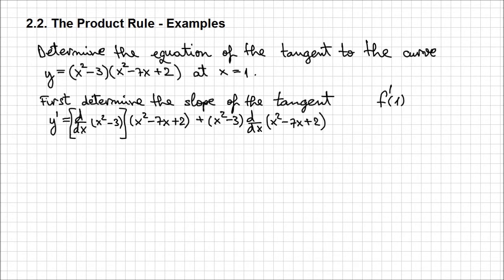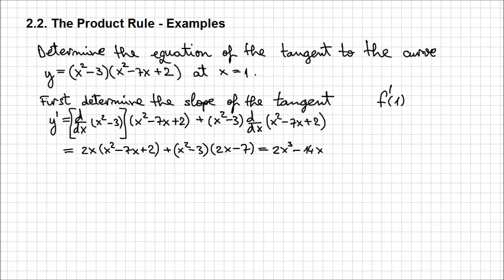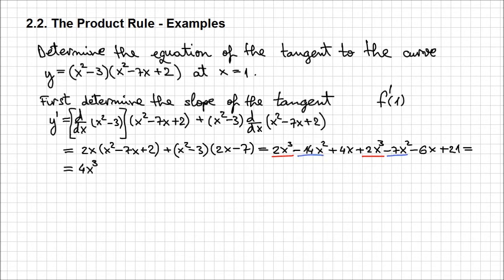Now we can evaluate the derivatives of those expressions. The first one is going to be 2x times x squared minus 7x plus 2, plus x squared minus 3 times the derivative of that expression, which is 2x minus 7. Let's expand: we're going to have 2x cubed minus 14x squared plus 4x, and the second product expands to 2x cubed minus 7x squared minus 6x plus 21. Let's look for the like terms: 2x cubed and 2x cubed, minus 14x squared and minus 7x squared, and 4x and minus 6x.